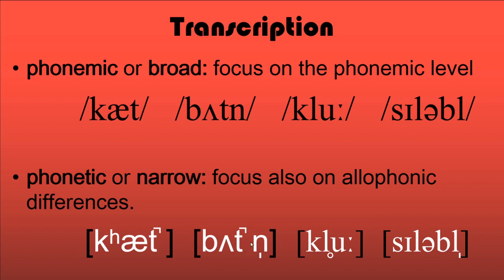In 'button,' the N has a diacritic mark underneath showing it is a syllabic consonant — a consonant serving as a syllable with the vowel implied. Similarly, in 'syllable,' the final L is a syllabic consonant. And in 'clue,' the L has a different allophonic form from the L in 'lap' — in English we have one phoneme L, but with different allophones in different positions.